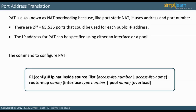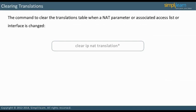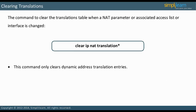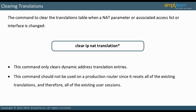Dynamic NAT PAT translations can expire. The command shown is used to clear dynamic entries in the translations table. You can clear all at a time or use the asterisk for all dynamic entries. You can use this command each time a NAT parameter or associated access list or interface changes. However, using this command on a production router is not advisable since it resets all existing dynamic translations, disconnecting all existing user sessions. Dynamic entries ordinarily expire after 24 hours by default.